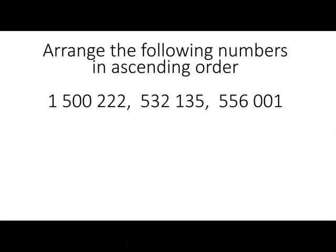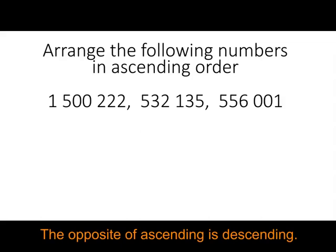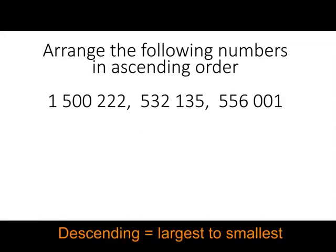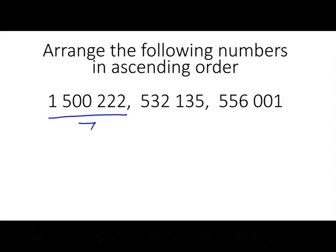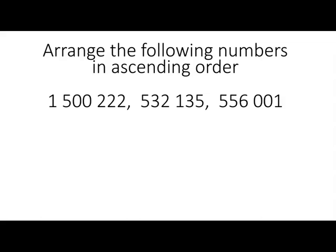Now let's try another question. Here we want to arrange these three numbers again in ascending order. What we can first look at is how many digits each of these numbers have. This first number has 7 digits, so it is the largest number. We can tell this because the 1 represents 1,000,000. In the second number, the 5 represents 500,000. And in the third number, the 5 also stands for 500,000.